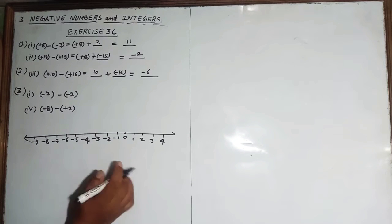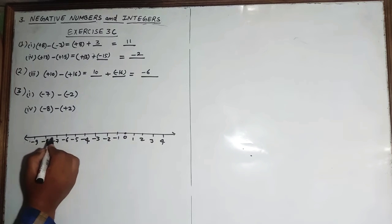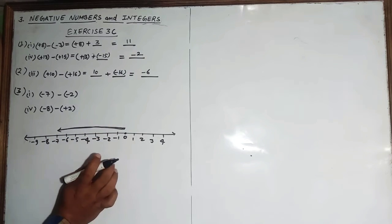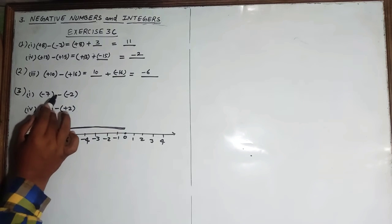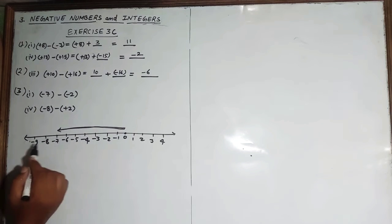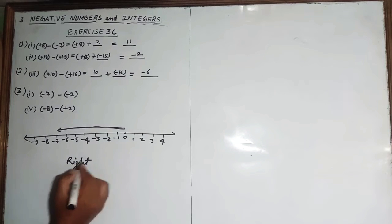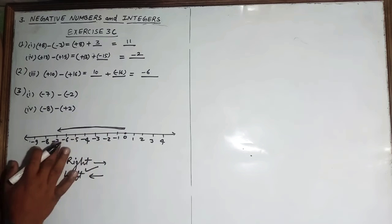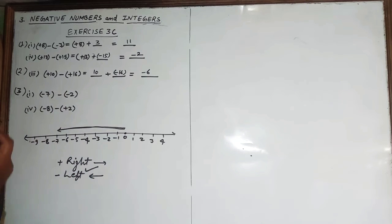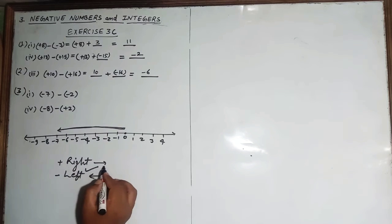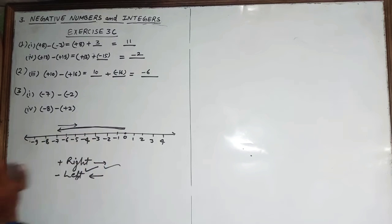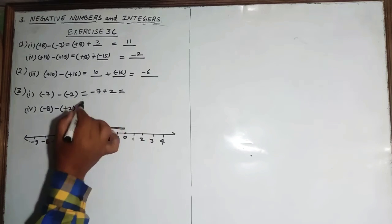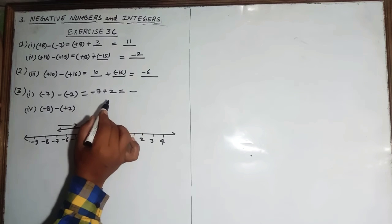First we have to solve minus 7 minus minus 2. Minus 7 is here on the number line. From 0, up to minus 7 you will make a straight line. Then minus minus 2 — minus into minus becomes plus — so plus 2 steps you have to move towards the right. So from minus 7 we move two steps back. So one, two — up to minus 5. So it will be equal to minus 7 plus 2, which is minus 5.